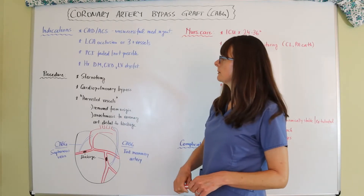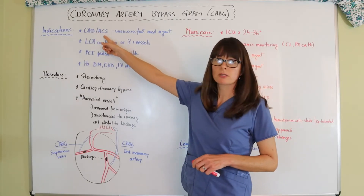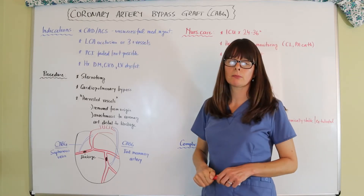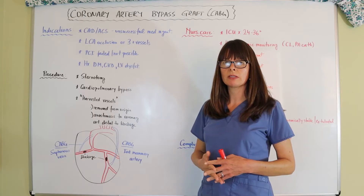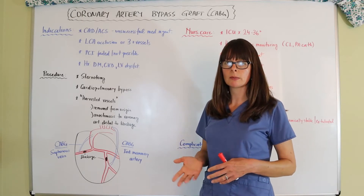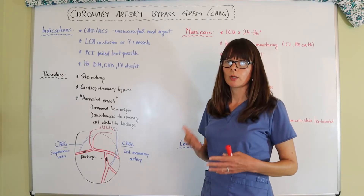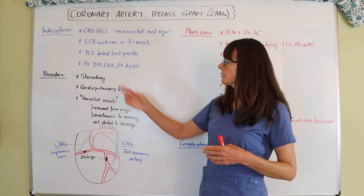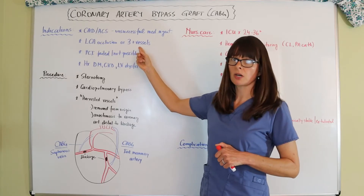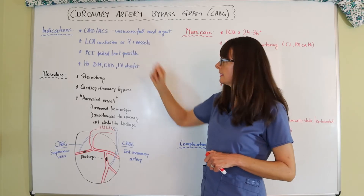Looking at the indications: typically the patient has coronary artery disease or has had episodes of acute coronary syndrome that cannot be medically managed. So the medications we're giving the patient for treatment of acute coronary syndrome, unstable angina, or stable angina are not working. When there is an occlusion to the left coronary artery or three or more vessels are blocked, a coronary artery bypass graft is indicated.